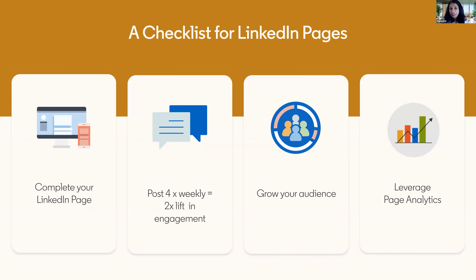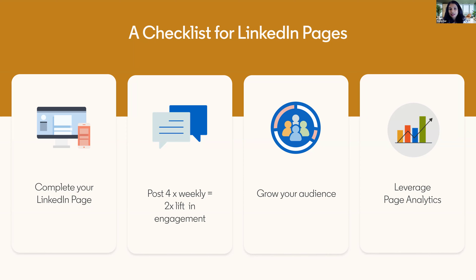From there, think about posting. Companies that post around four times a week see twice the lift in engagement in their social actions — likes, comments, reposts, and shares. You'll need to get started with your audience: a minimum of 150 followers on the page allows true growth in followership. After that, go back into Campaign Manager, where you'll see your page analytics dashboard and can monitor the impact of your organic efforts to understand which content to promote with your ad budget.